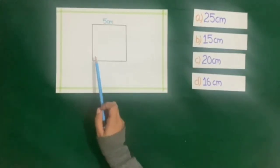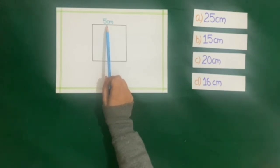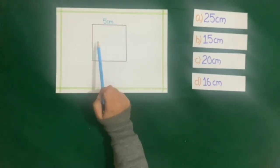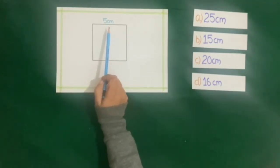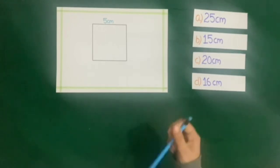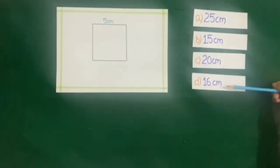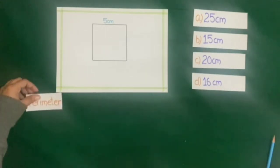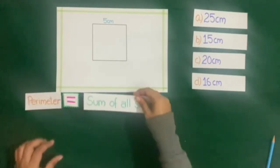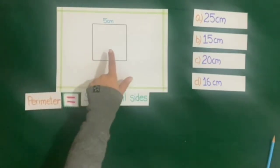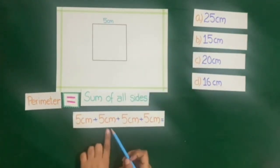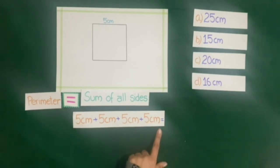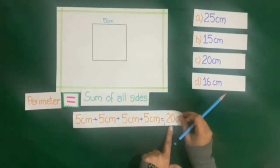Here a square is given whose length is 5 cm. We know that all sides of the square are equal, so each side is 5 cm. We have to find the perimeter of this square. Four answers are given and we will choose the correct answer. Perimeter is equal to sum of all sides, so 5 cm plus 5 cm plus 5 cm plus 5 cm, which is equal to 20 cm.